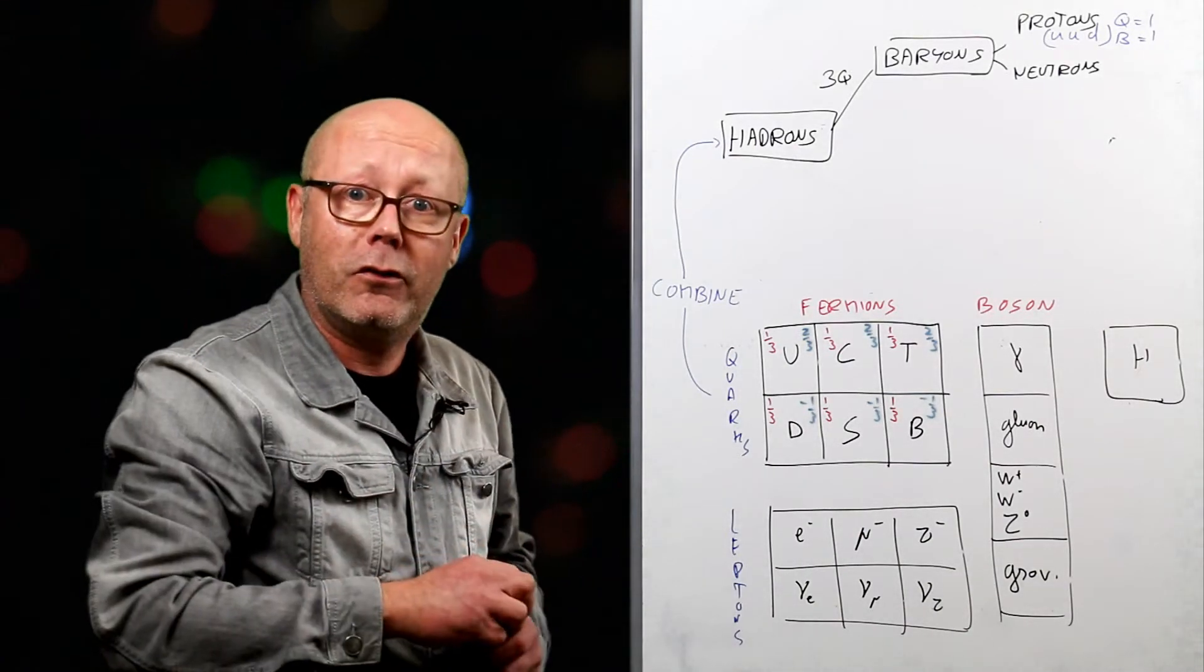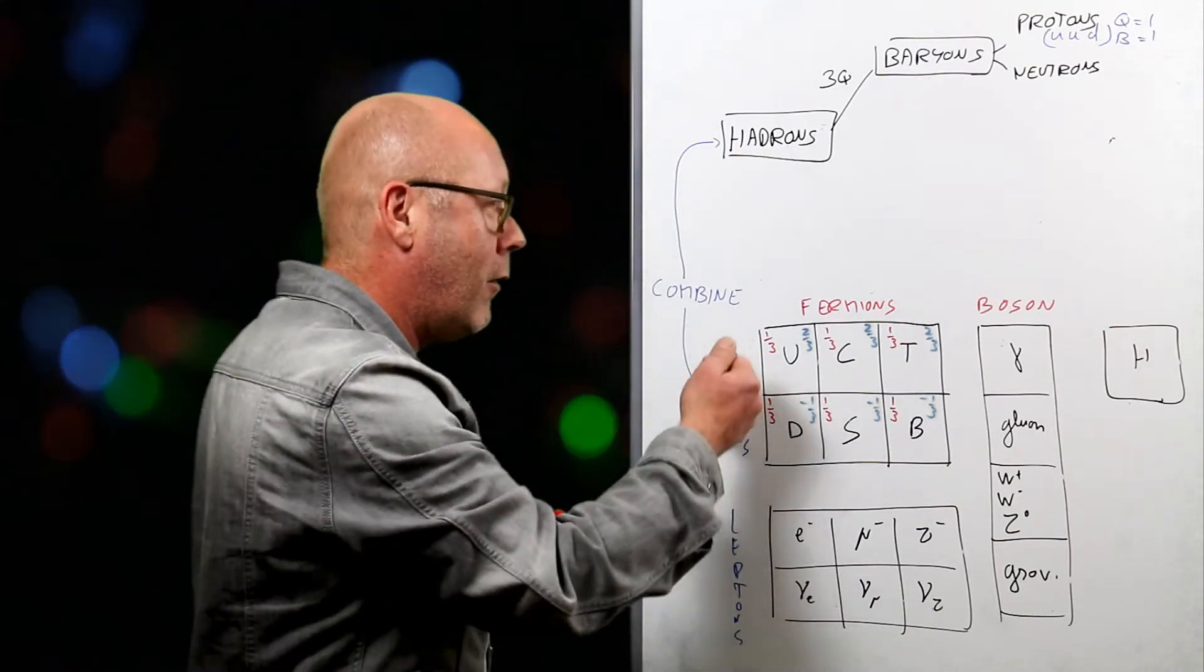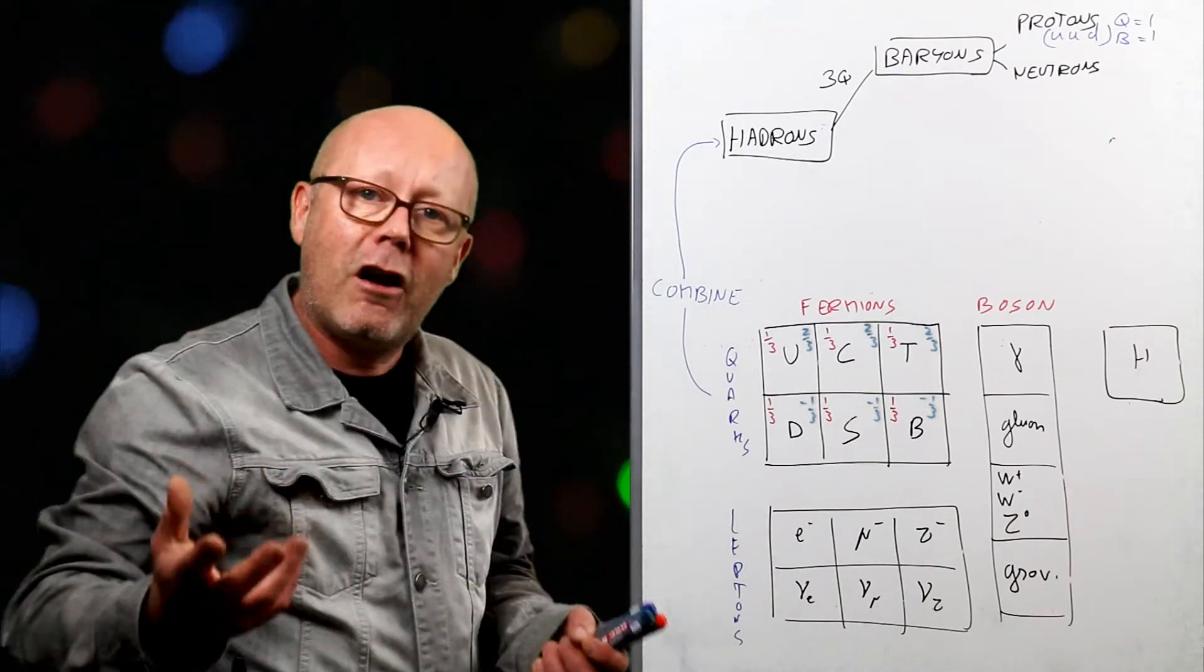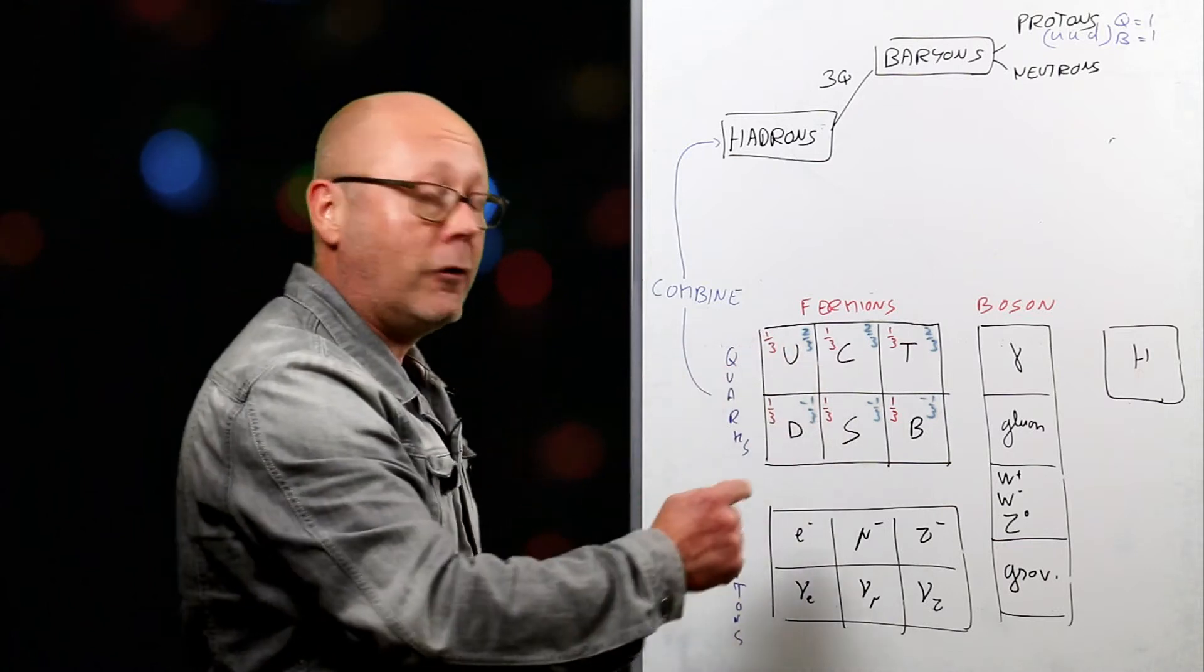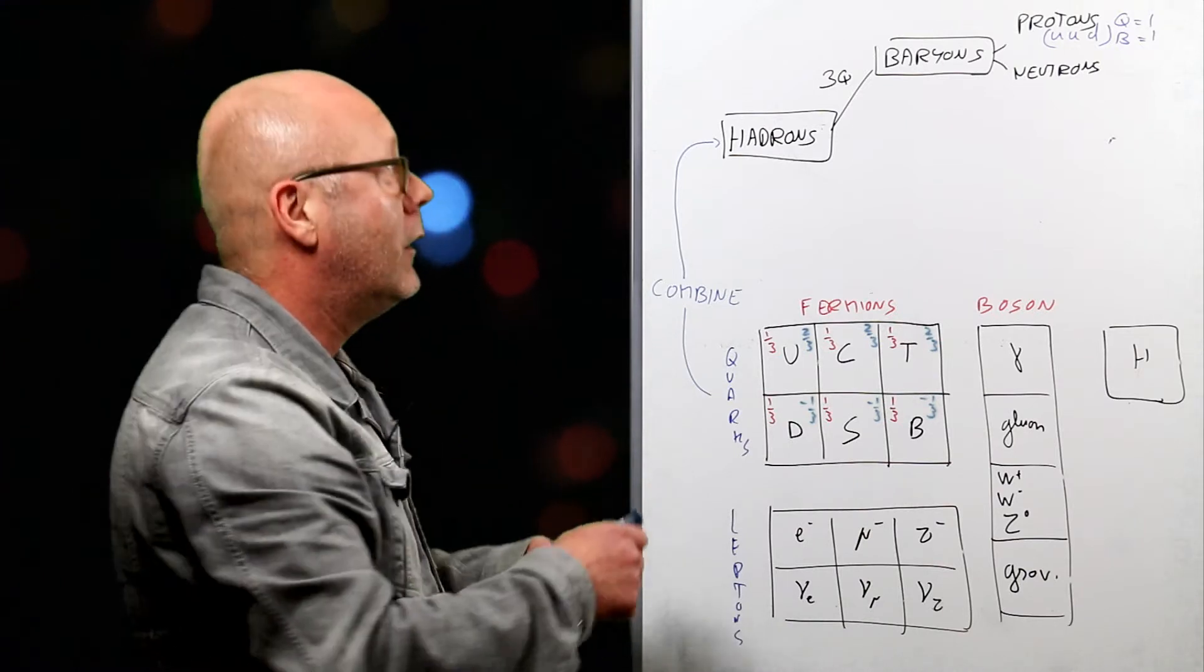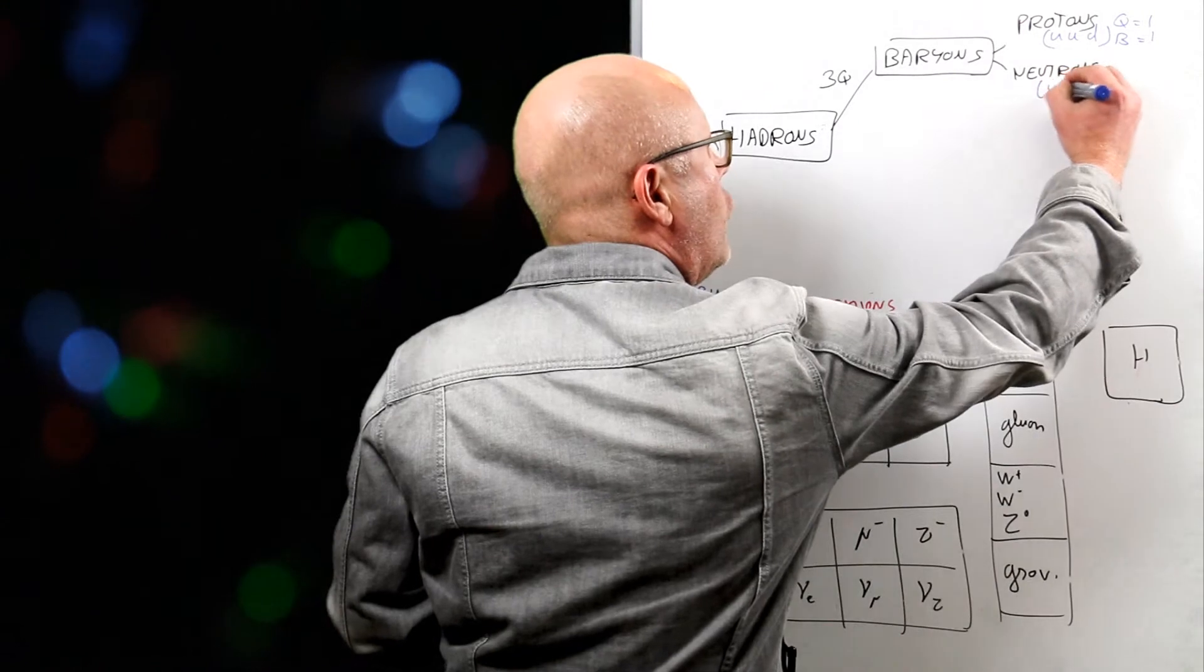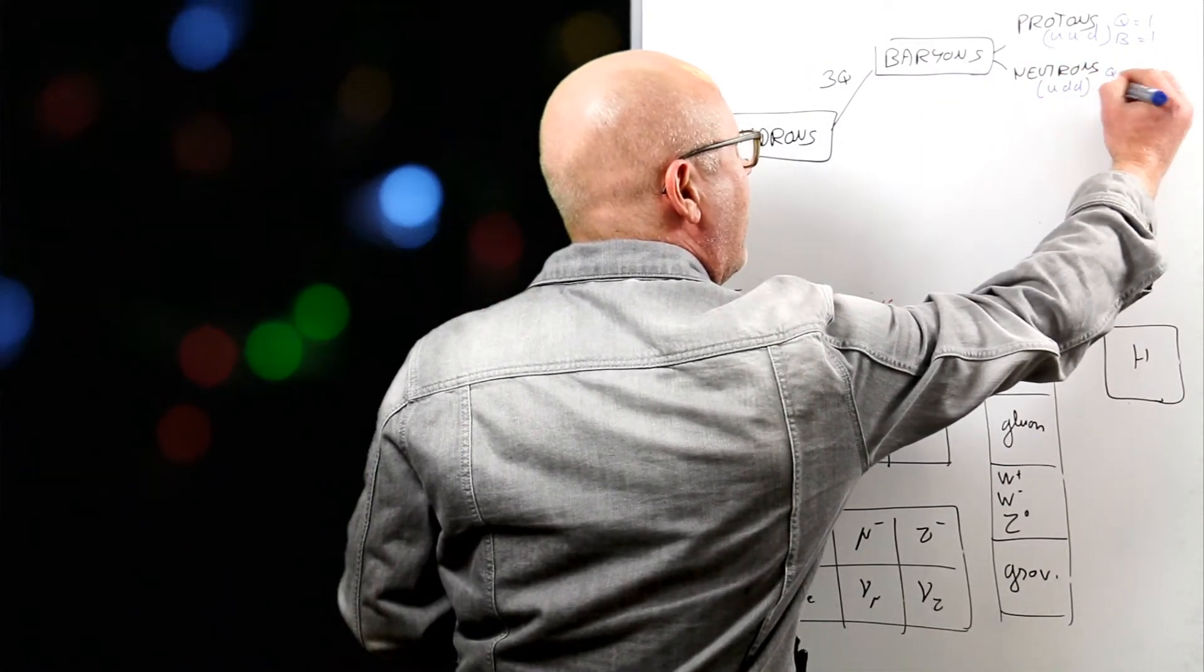Neutrons are also baryons, so they are made of three quarks. The baryon number will be one third plus one third plus one third equals one. But the charge, as you know, is zero. They are made of one up and two downs. Two thirds minus one third minus one third. So a neutron can be written UDD. The charge is zero and the baryon number is one.